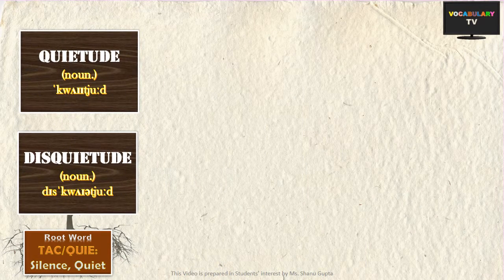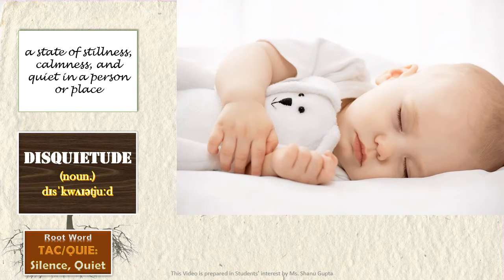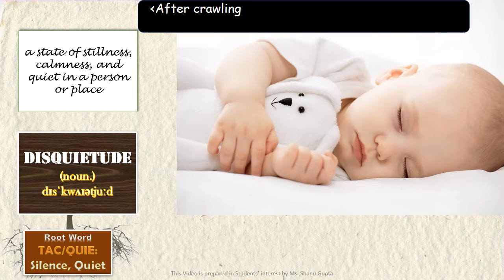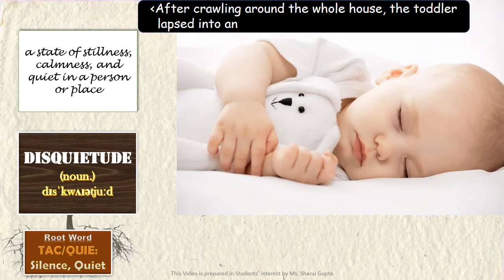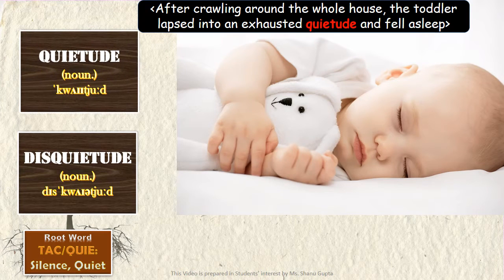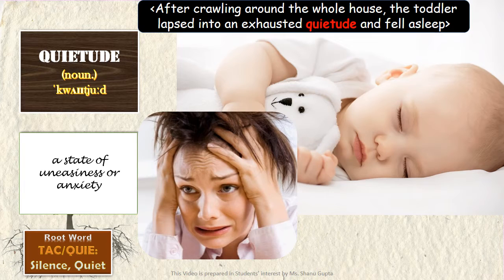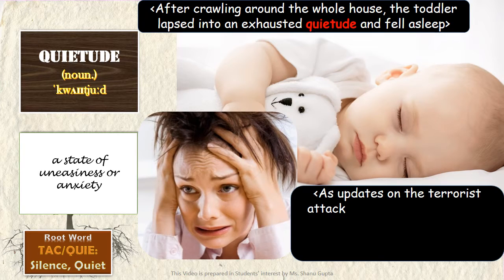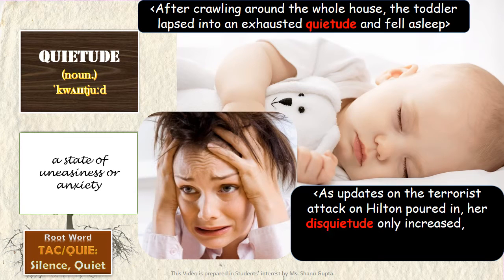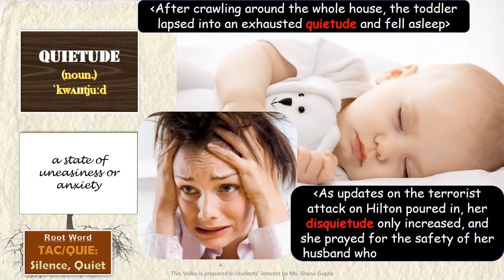Related words are QUIETUDE and DISQUIETUDE. Quietude refers to the state of stillness, calmness, and quiet in a person or place — for instance, after crawling around the whole house, the toddler lapsed into an exhausted quietude and fell asleep. Disquietude, with the prefix 'dis' forming an opposite, means the absence of quiet — if your mind is not settled, you are in a state of uneasiness or anxiety. For example, as updates on the terrorist attack poured in, her disquietude only increased, and she prayed for the safety of her husband who was staying there.